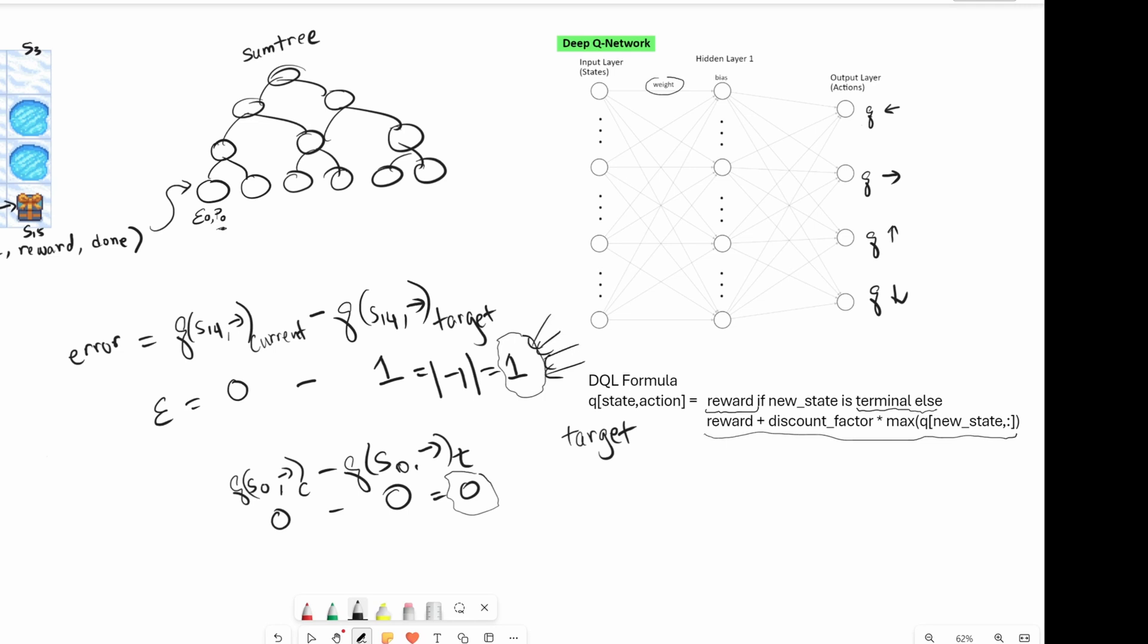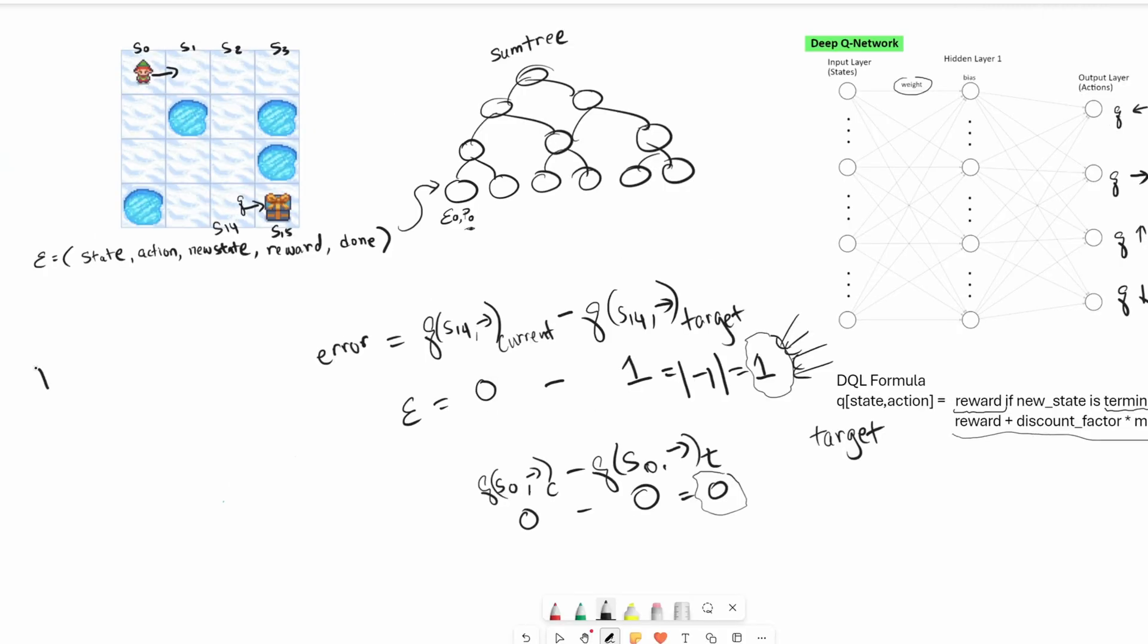Now you can see the difference when there is an error versus when there's almost no error. It gives us a good indication we should be training the stuff that gives us some kind of error. Let me start constructing our priority formula over here. It's the absolute value of, we're using E again. We'll use small e, the error.